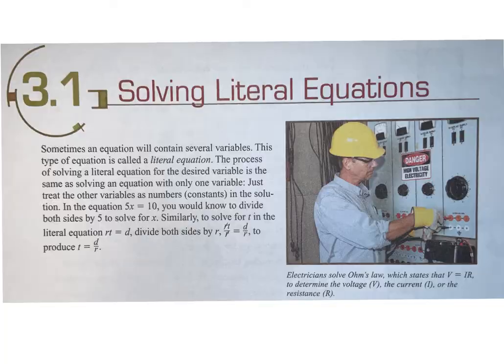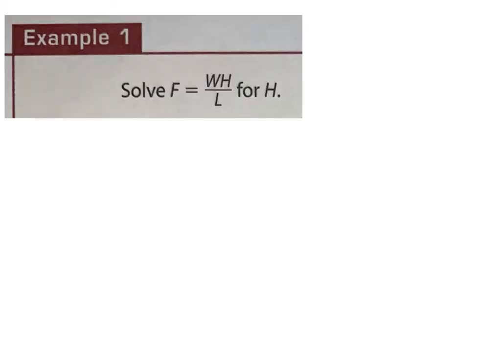Let's look at the first example. They've given us the equation F equals WH over L, and they want us to solve specifically for the variable H. Our goal is to get H completely by itself. We're going to look at everything with the H and say, how do we get rid of it?